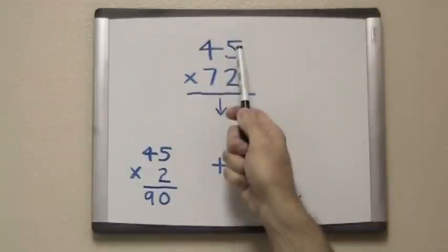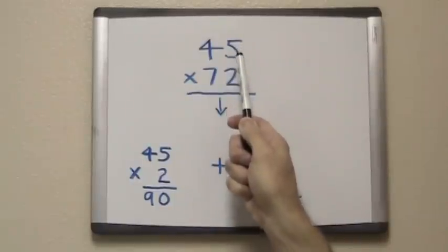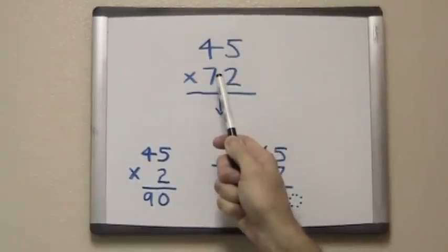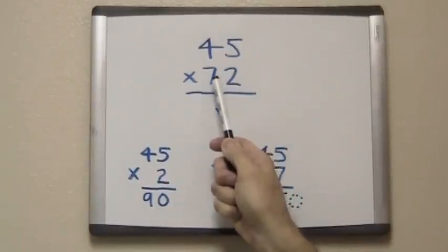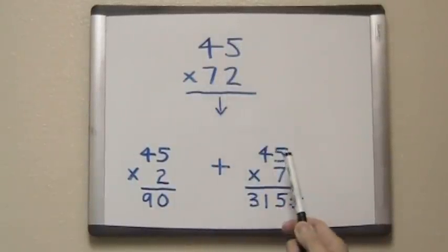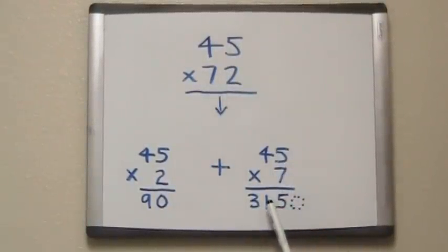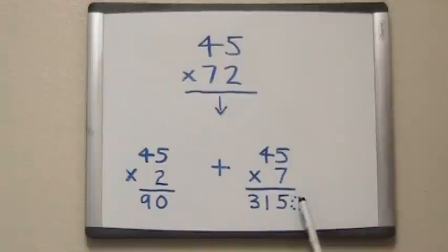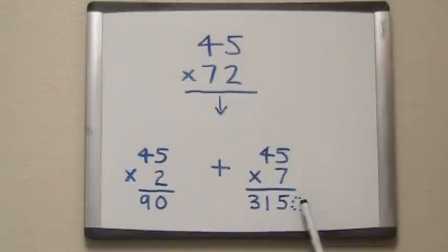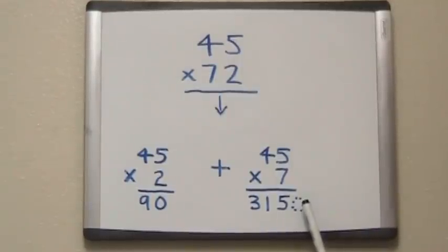Then we take the 45, and even though we're multiplying by 70, we're putting down 7, and when we get our answer, we're adding a 0 as if we did multiply by 70.